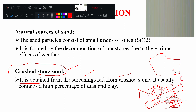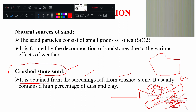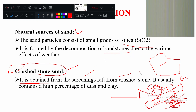After crushing and screening, the passing material — generally less than 4.75 mm — is called sand. Because it is obtained from stone crushing, it is named crushed stone sand. One major component is silica, and it is obtained from decomposition of sandstones, or alternatively from the crushing of aggregates.